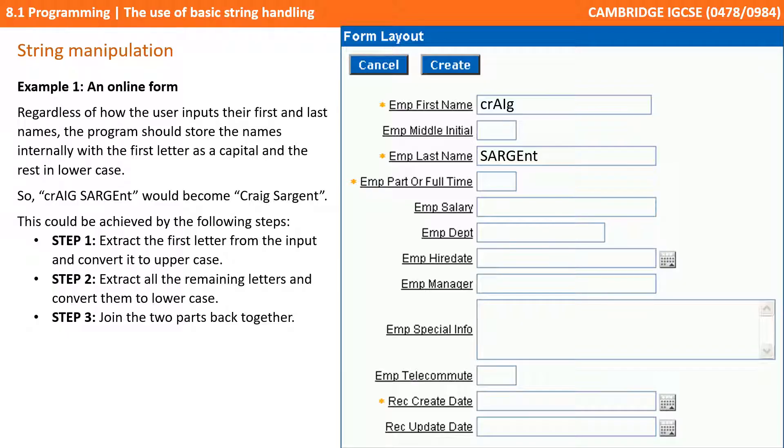This can be achieved by using string manipulation commands, and we could do this in three steps. Step one: extract the first letter from the input and convert it to uppercase. Step two: extract all the remaining letters and convert them to lowercase. And step three: join the two parts back together again.